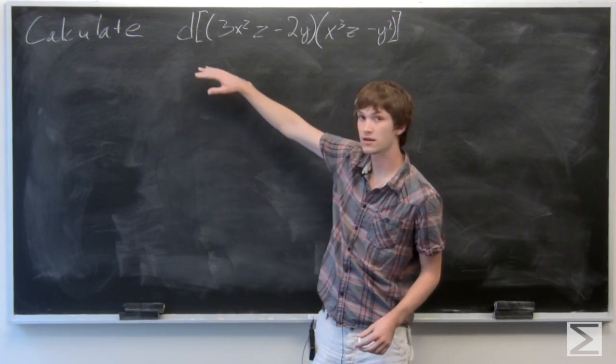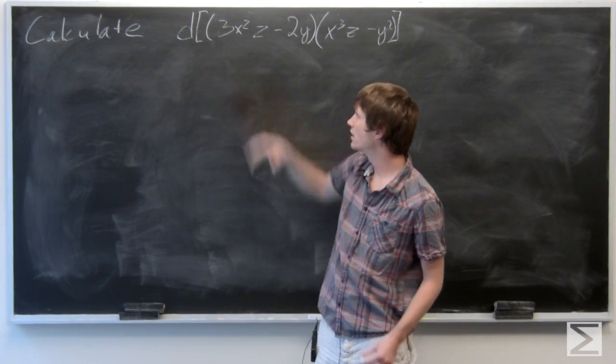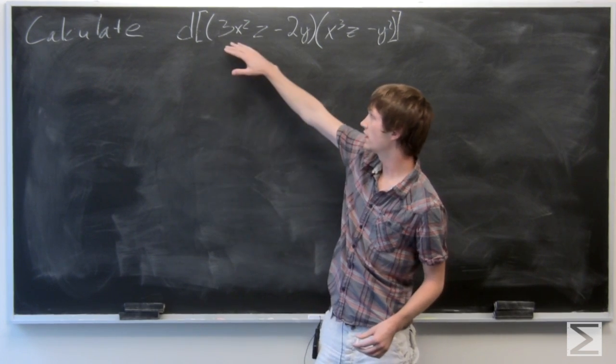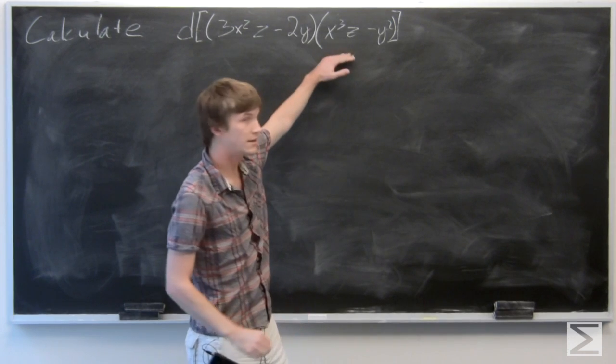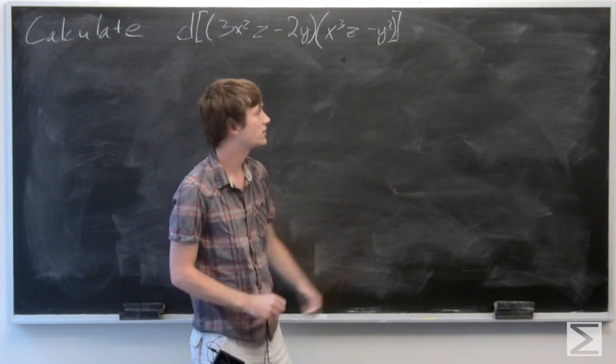In this problem, we're asked to calculate the differential of this function: the quantity 3x²z minus 2y times the quantity x³z minus y².